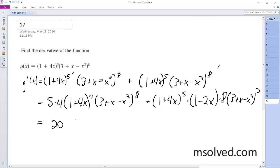So 20, 1 plus 4x raised to the 4th, 3 plus x minus x squared raised to the 8th plus 1 plus 4x raised to the 5th times 1 minus 2x times 8, 3 plus x minus x squared raised to the 7th.